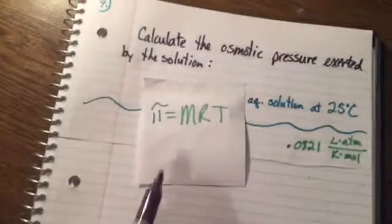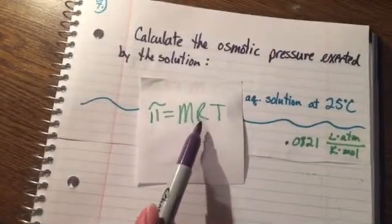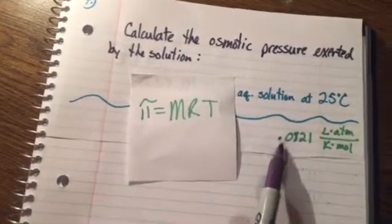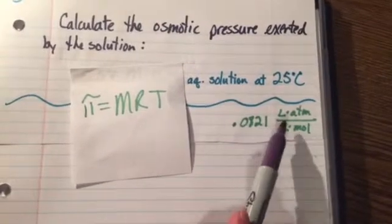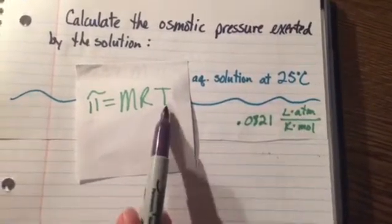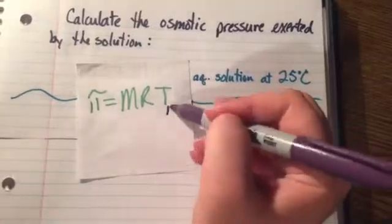We can recall that our formula for finding osmotic pressure is molarity times our R constant, which is 0.0821 liter atmosphere per kelvin mole, times our temperature, which is going to be in kelvins.